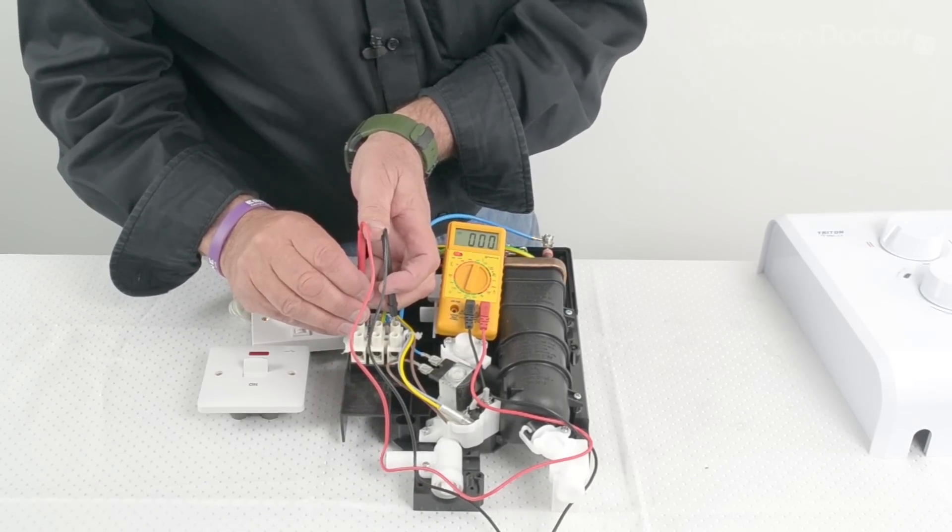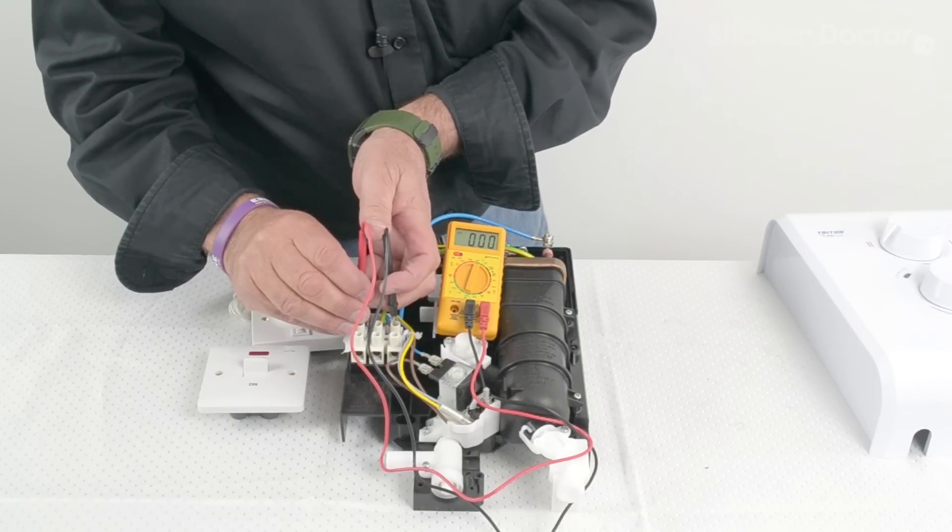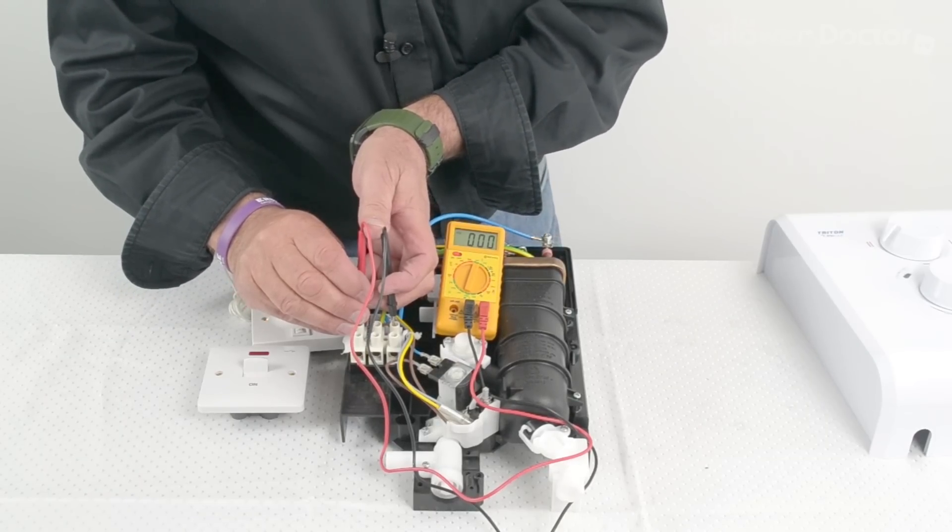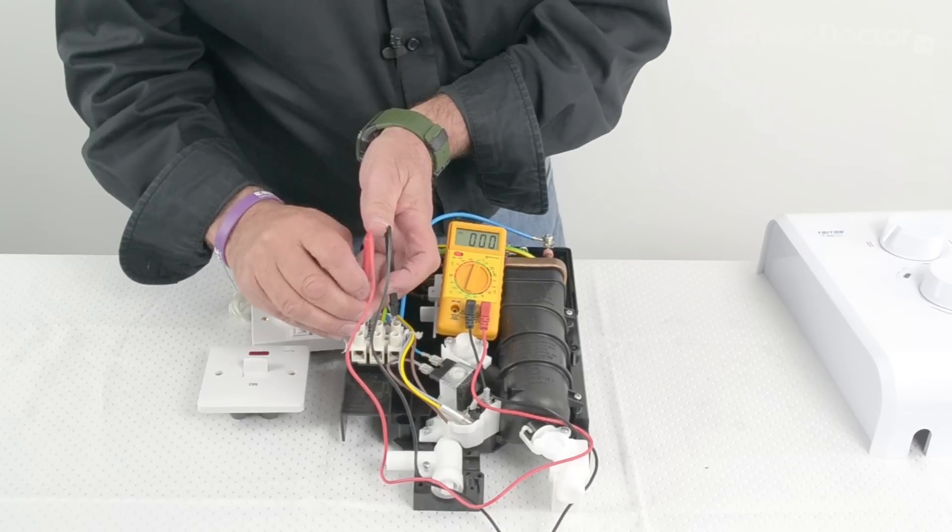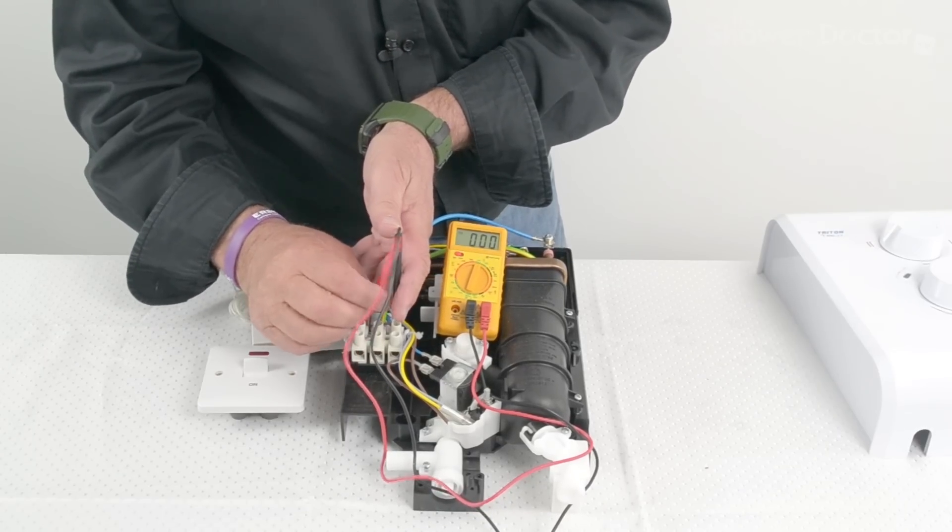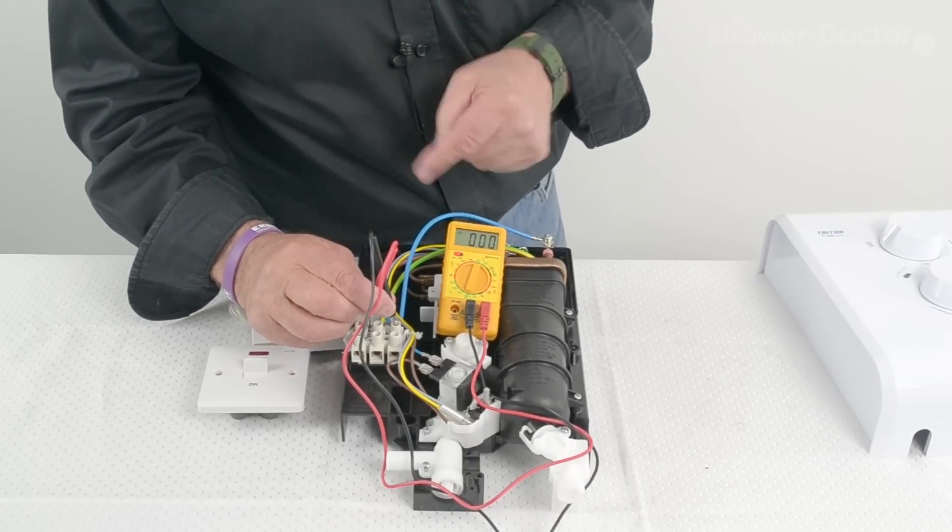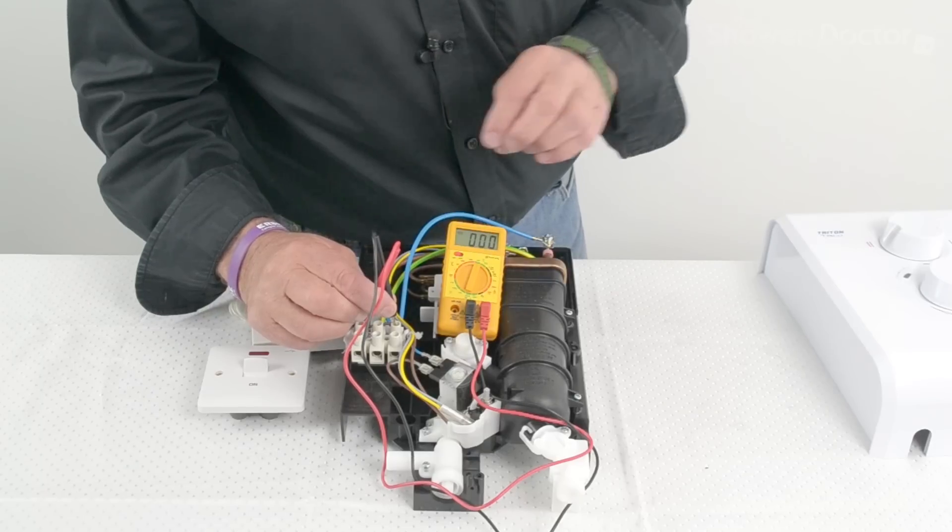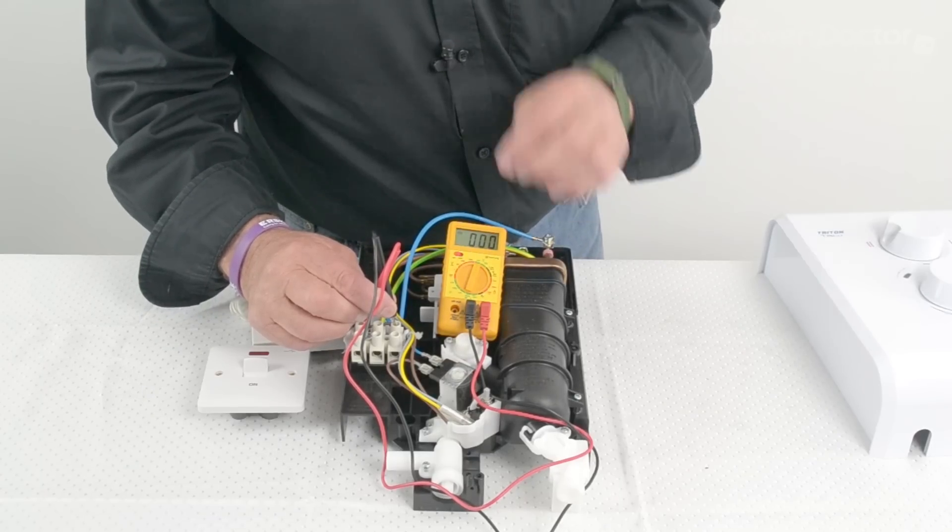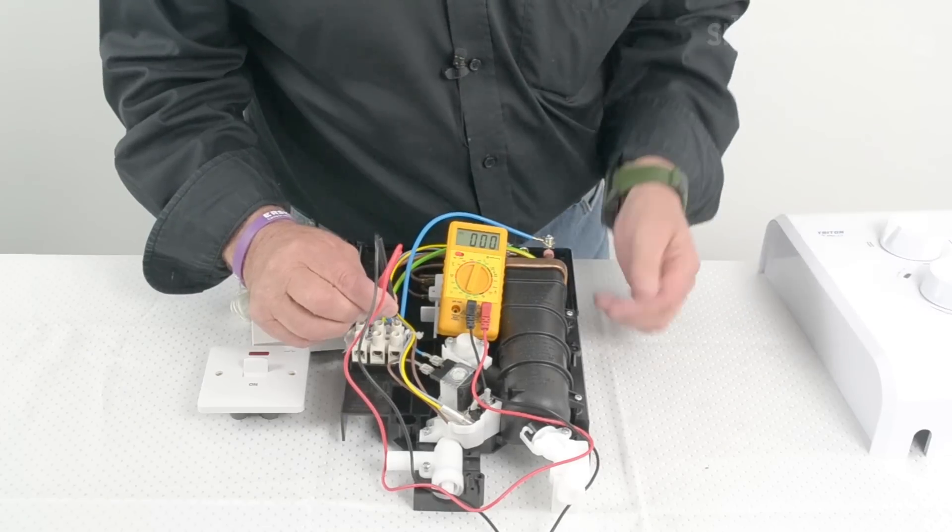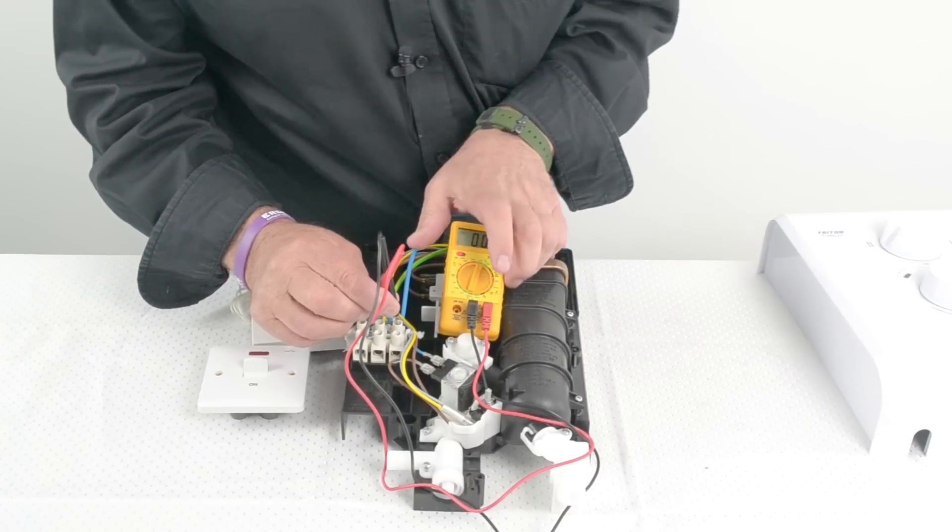Now as long as you've got power reading here that proves that there's power coming into the unit and so therefore because that's live the rest of the unit should work and we carry out the other tests after that. But we now know that this has power so we now go back and switch the isolating switches off.